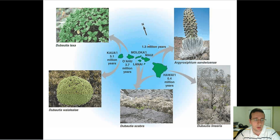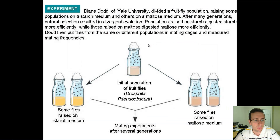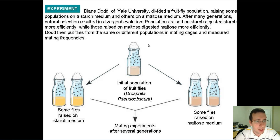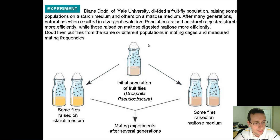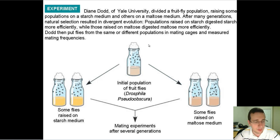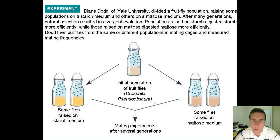If that's still not enough, let's look at a different example done in the lab at Yale. They used fruit flies — Drosophila pseudoobscura, the same kind Thomas Hunt Morgan used in chromosome inheritance studies — and put one set in starch and the other in maltose. A female researcher from Yale noticed that separating the fruit flies into different environments led to speciation between the two groups over several generations.